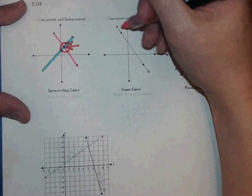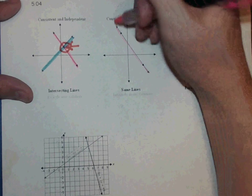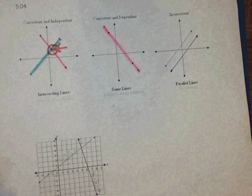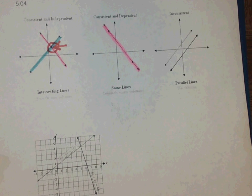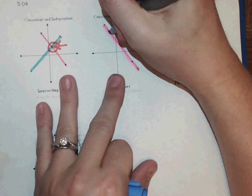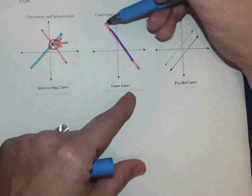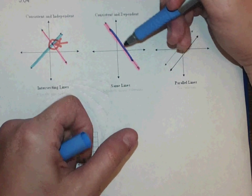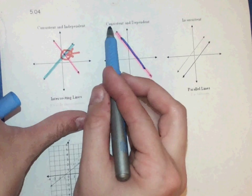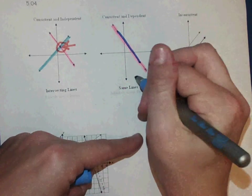Now consistent and dependent, if you notice, there's a line right here. But there is also another line sitting right on top of it. Those share all the points in that line. So this one would be consistent as well because it does have solutions. This one would be all solutions.